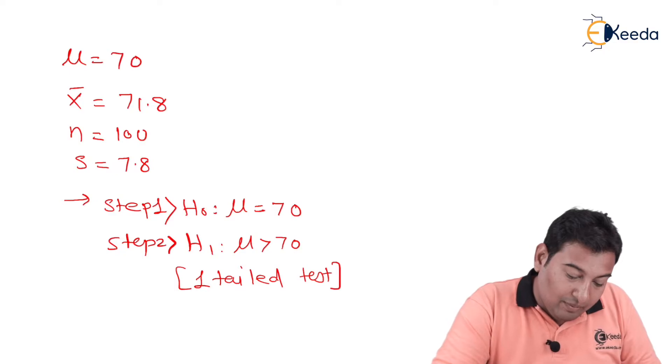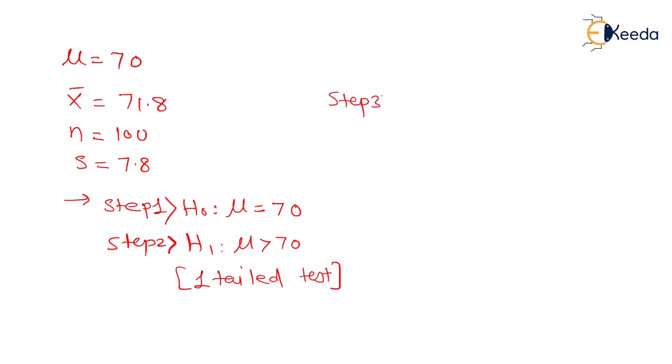LOS is 5% mentioned. So step number 3 is your LOS part, which is given as 5% and one-tail test. And as we have discussed, 5% will be removed from one side, so you will be left with 45%. And after looking at the Z table, you will get to know this value is 1.64. So this is your step number 3 done.